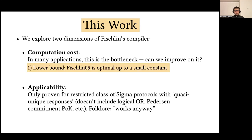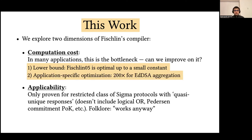To begin with, we give a lower bound that explains the lack of progress in Fischlin's original work, showing that Fischlin's protocol is optimal up to a small constant in terms of computation. But on the other hand, we do show that application-specific optimization is possible. In particular, we show up to a factor 200 improvement for the application of ECDSA signatures.